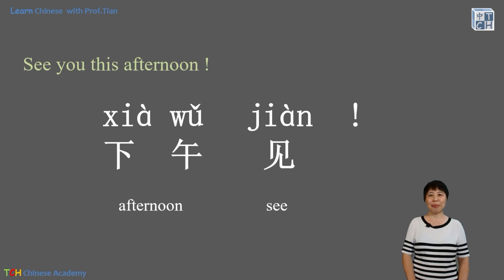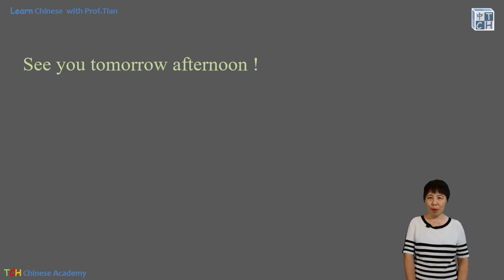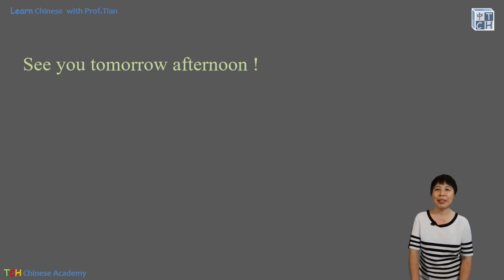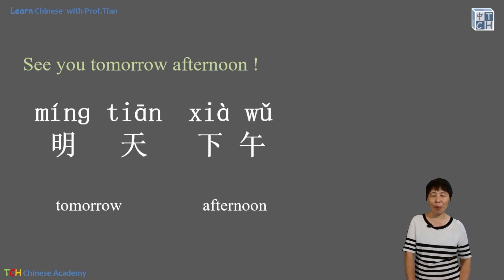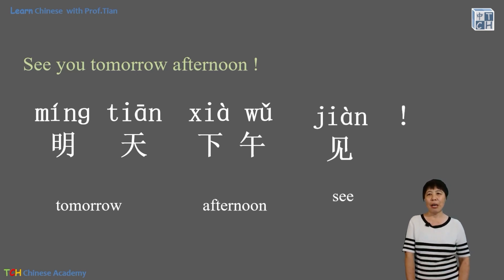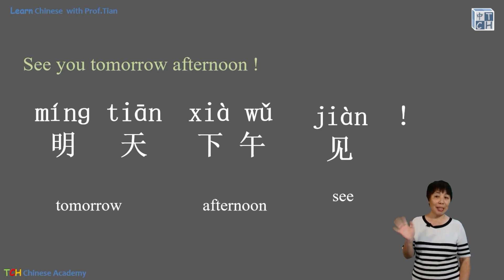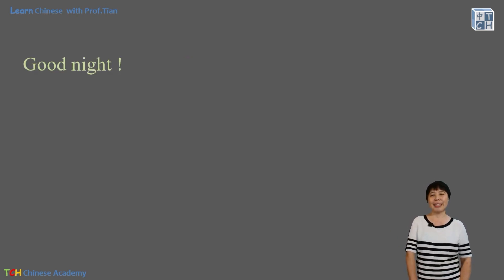How about 'see you tomorrow afternoon'? We've learned 明天 for tomorrow and 下午 for afternoon, then add 见. Put them together: 明天下午见. That's more specific.